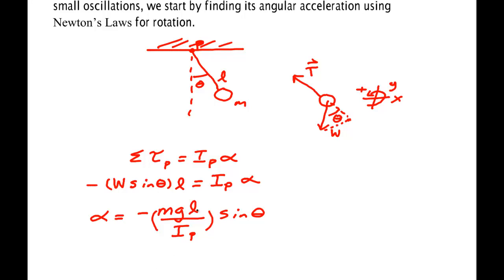Now mass, g, length, and the moment of inertia, they all turn out to be constants. So there's no problem with this being a positive constant.